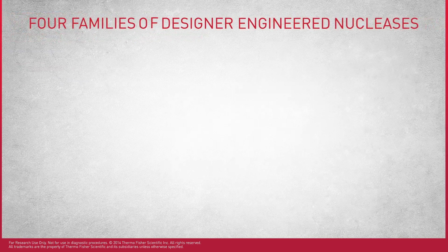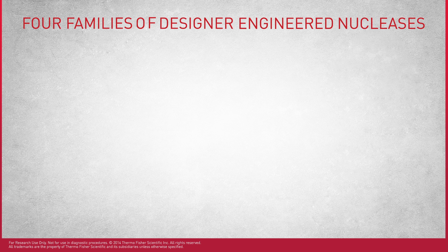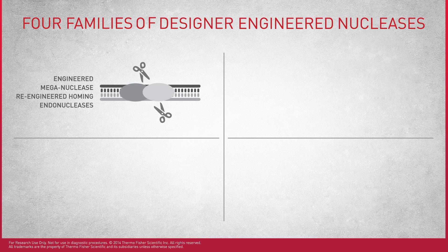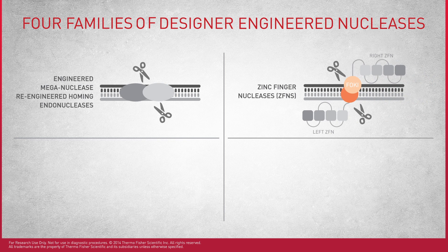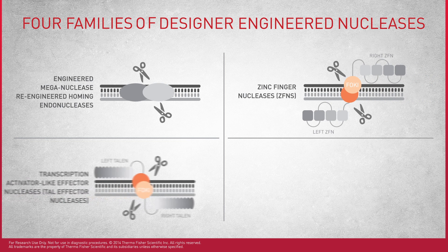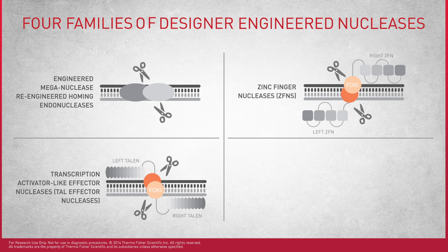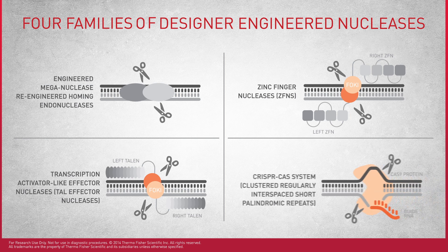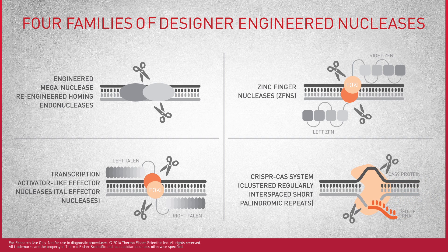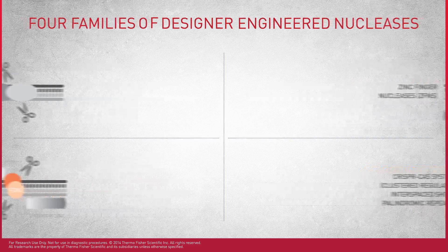There are four families of designer-engineered nucleases: engineered mega nuclease re-engineered homing endonucleases, zinc finger nucleases, transcription activator-like effector nucleases, and clustered regularly interspaced short palindromic repeats, or the CRISPR-Cas system.